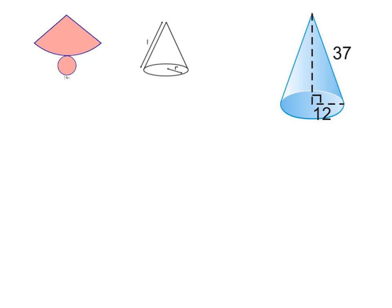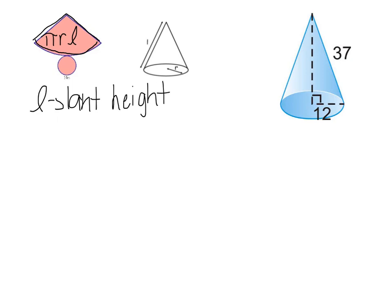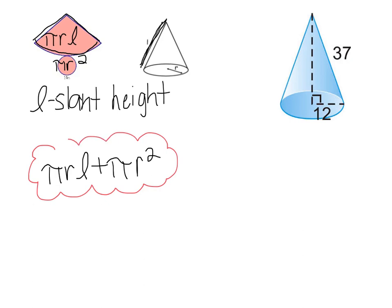Now we're going to look at the surface area of a cone. We have this odd shape on the net — a partial triangle with a curve at the bottom. The way we find the area of that shape is π times r times l, where l is the slant height of the cone, and that's typically the height given. So the first part of the surface area of a cone is πrl. The second part is the area of the circle, which is πr². So the formula for the surface area of a cone is πrl plus πr².